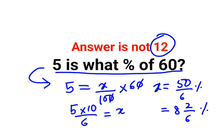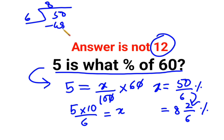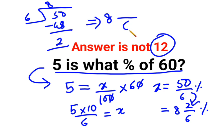Now how did I get this? We had 50 divided by 6 — 6 eights are 48, and when you take 48 away from 50 you get 2. So when you want to write it in its fraction form, 8 becomes the integer, 6 remains the denominator, and 2 becomes the numerator.